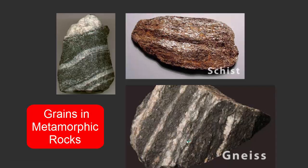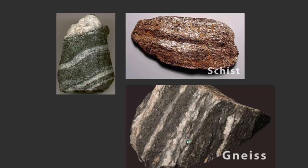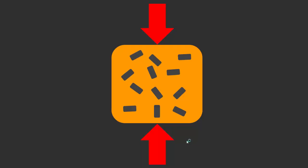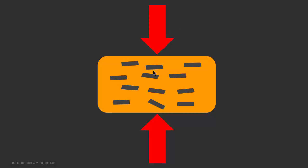Now we know that metamorphic rocks have a preferred orientation called foliation. But how do they occur? There are a couple of mechanisms that make grains foliate. The first one is by external pressure. If you have a rock and the grains are oriented randomly, and you apply force from a side or all sides, the grains will align themselves. When an external force acts on these randomly oriented grains, what you get is an alignment in a preferred orientation.